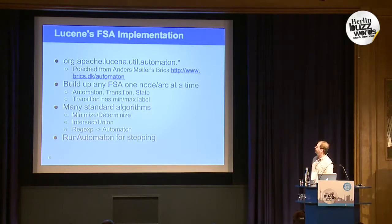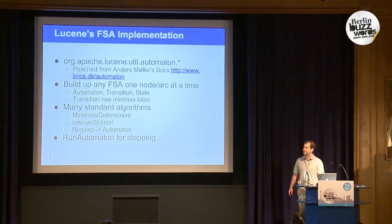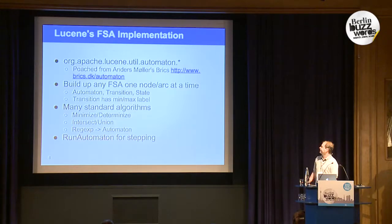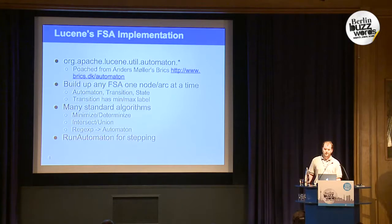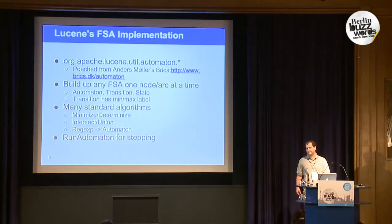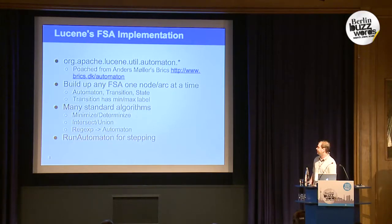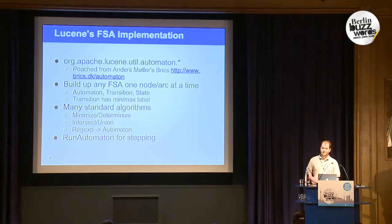For the FSA, we use an existing package and have made some improvements, submitting them back upstream. It's a pretty simple API — you can use objects and build automata. You wouldn't want to build something huge with this; it's something we use for regular expressions and things that are typically small, not a large auto-suggest dictionary. But it's nice for regular expressions — much better than using the JDK.